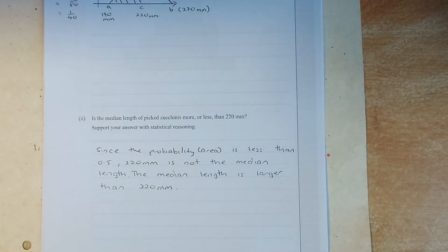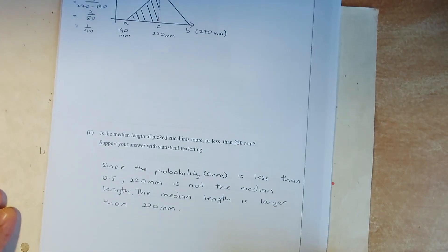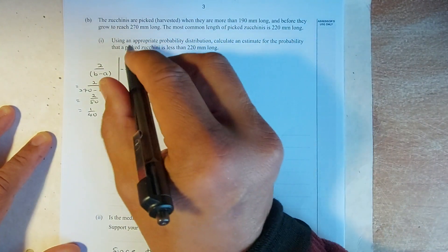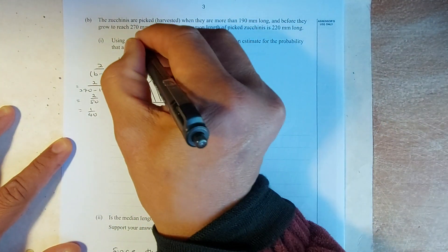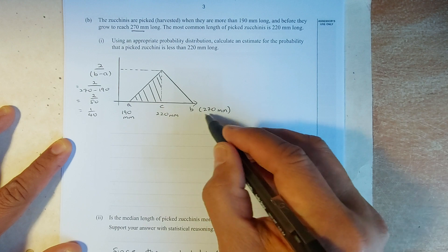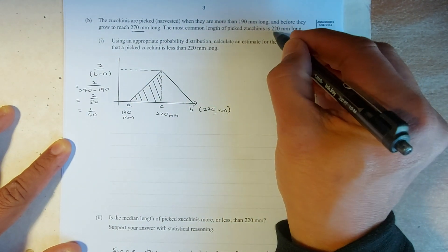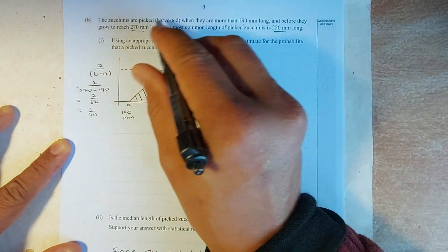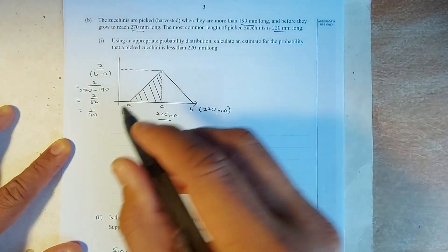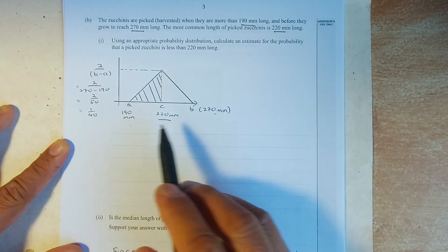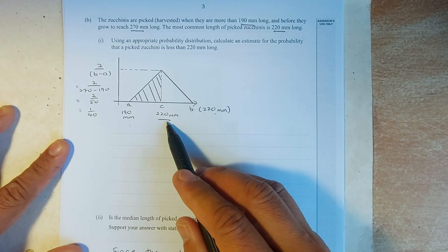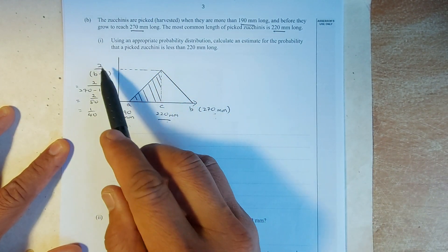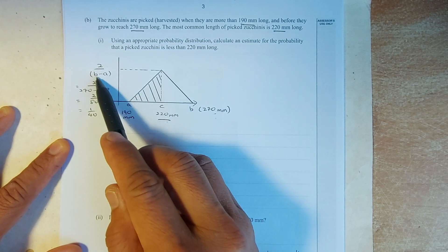Okay, the next question is triangular distribution. They say that it's able to reach 270. So, B is 270. The most common length is 220. So that will be your C. And the smallest number is 190. So, A is 190. B is 270. And the most common number is 220. So, you need to know in a triangular distribution, the formula to calculate the height is 2 over B minus A.